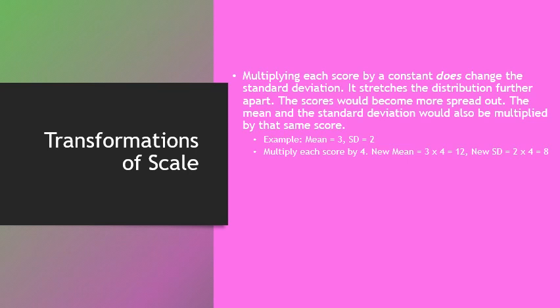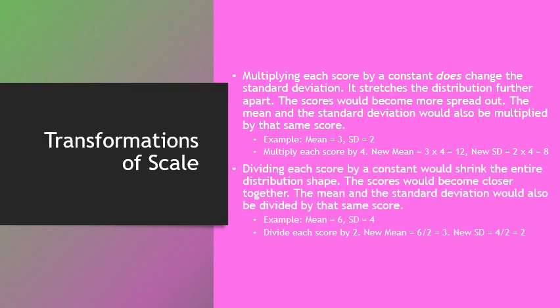Multiplying each score by a constant does change the standard deviation — it stretches the distribution further apart, making scores more spread out. The mean and standard deviation are both multiplied by that constant. For example, given a mean of 3 and SD of 2, multiplying each score by 4 gives a new mean of 12 and a new SD of 8. Dividing each score by a constant shrinks the distribution, and the mean and SD are both divided by that constant. For instance, a mean of 6 and SD of 4 divided by 2 gives a new mean of 3 and SD of 2.